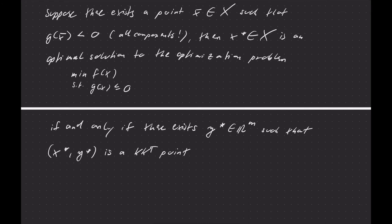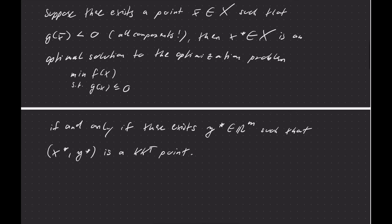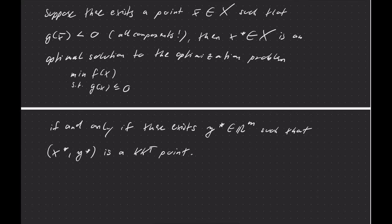Okay, and the important thing here is this if and only if condition. All right, so that means the condition is now both necessary and sufficient. So every KKT point is also automatically a minimizer with corresponding multiplier.